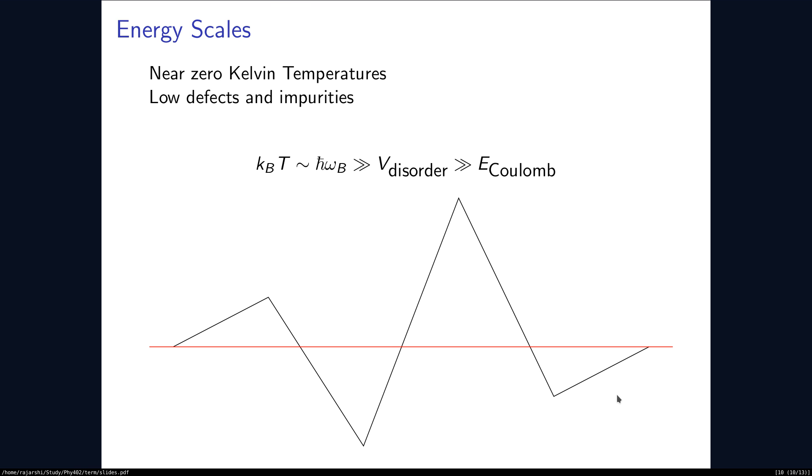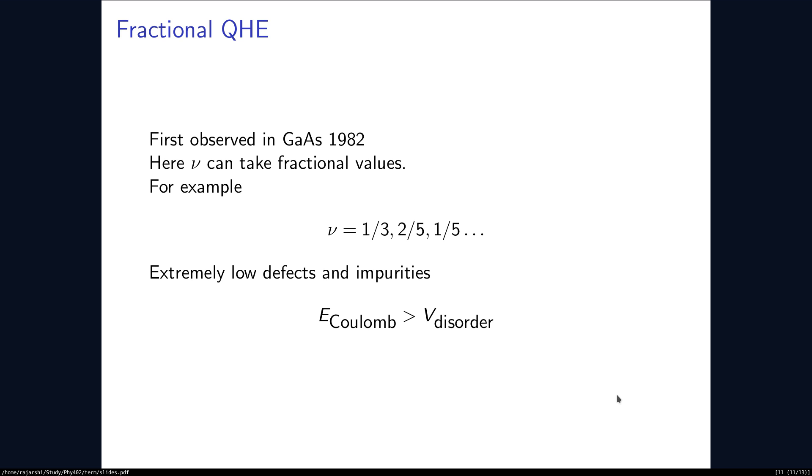Over here, we say that the disorder is larger than the Coulombic repulsion. What happens if we take a very pure crystal? In this case, we see the fractional quantum Hall effect.